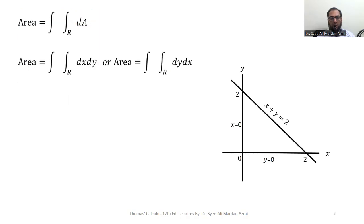In order to calculate area of a given region with the help of double integrals, we can replace dA by two methods, either by dx dy or dy dx. In the first case x is our inner variable and y is our outer, and in the second case we can choose y as inner variable and x as outer variable.